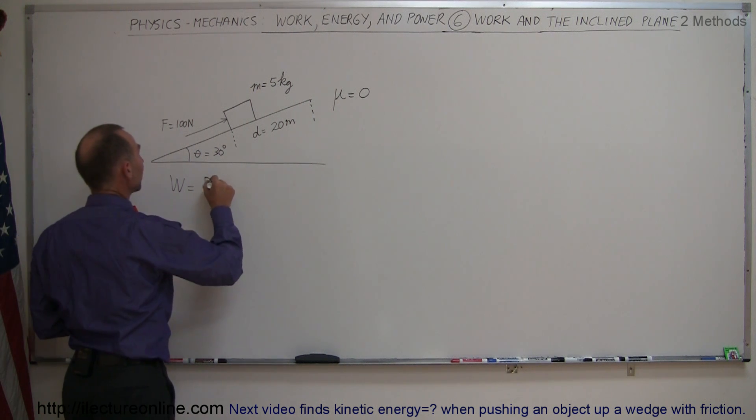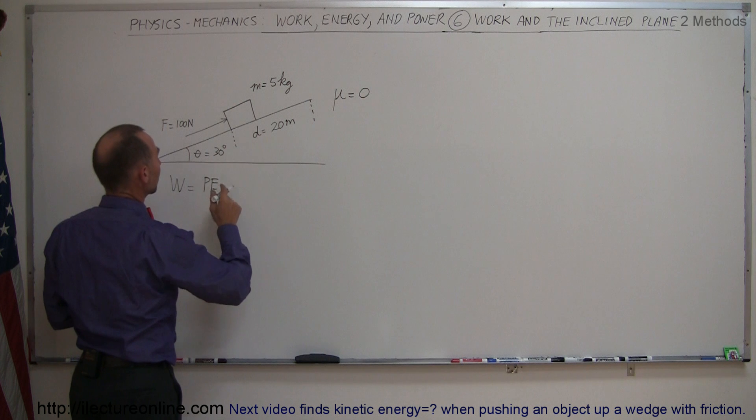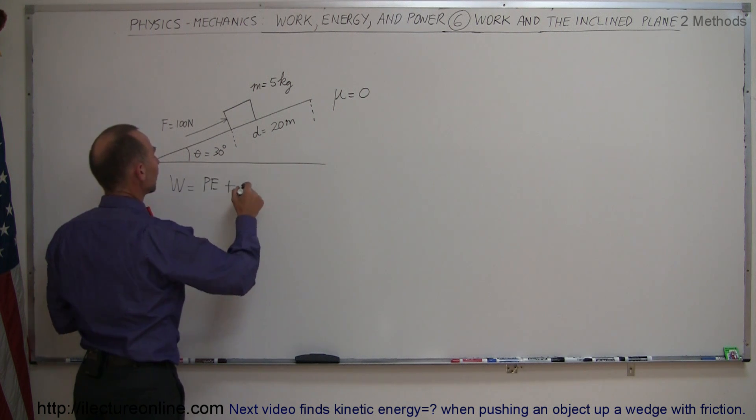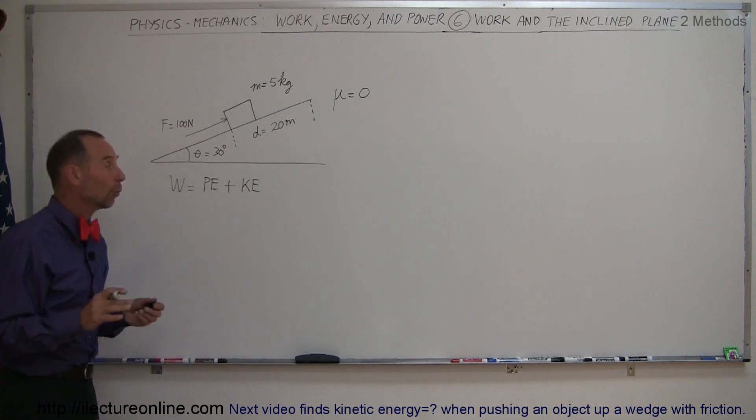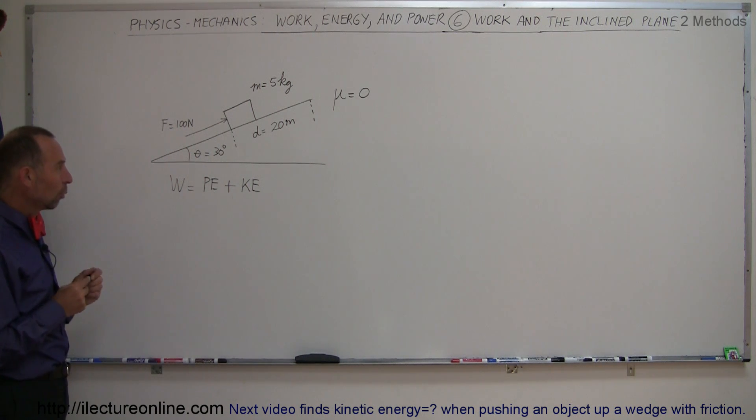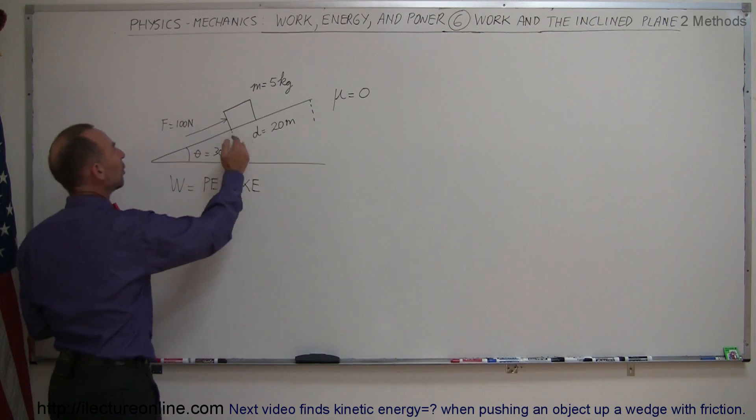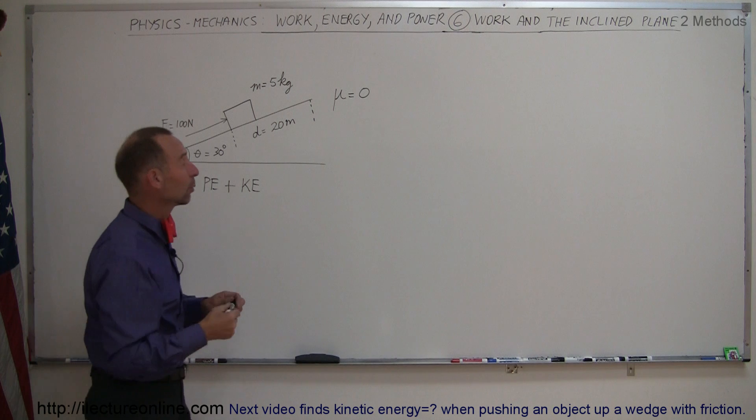So some of that work will be used to give the object potential energy, and some of the work will be used to give it kinetic energy, and of course there will be none left over, all of it will be used for either one or the other. So what we could do here is figure out how much work is done. We have a force, we know what the distance is, so we can calculate the work done.